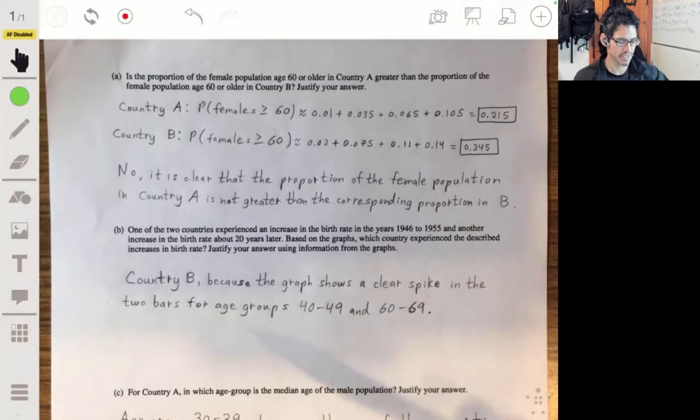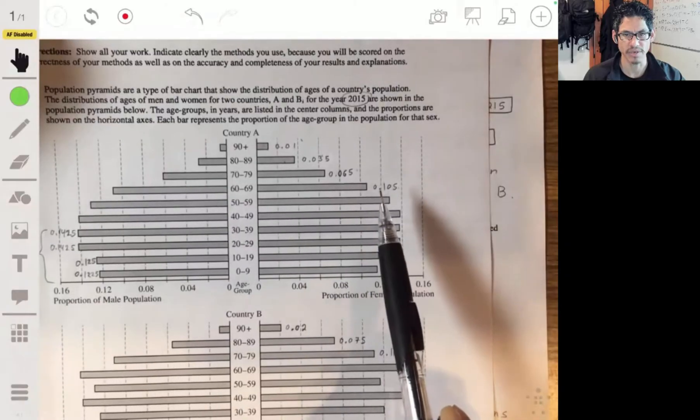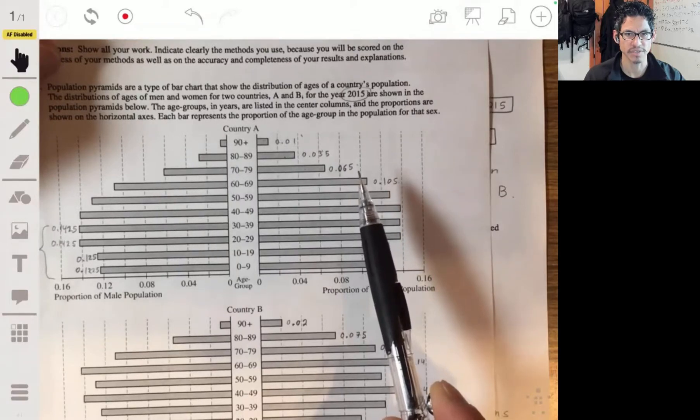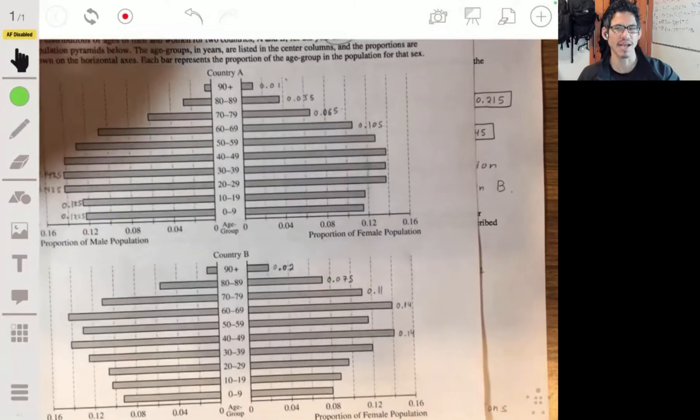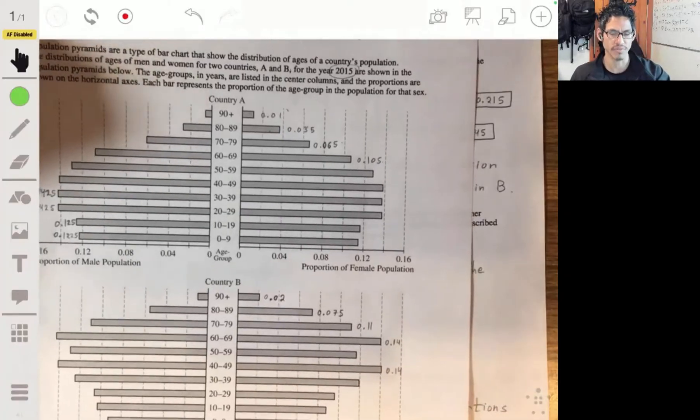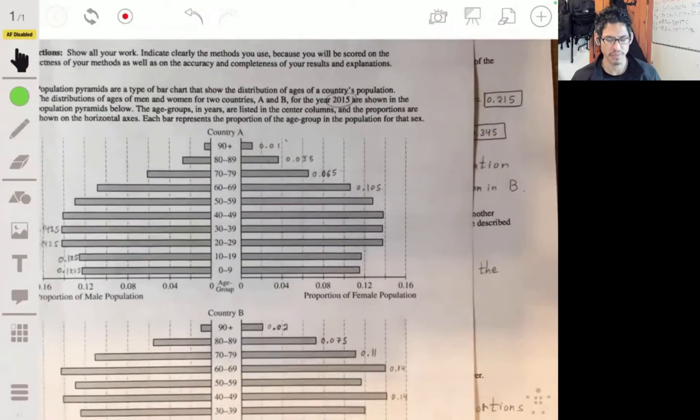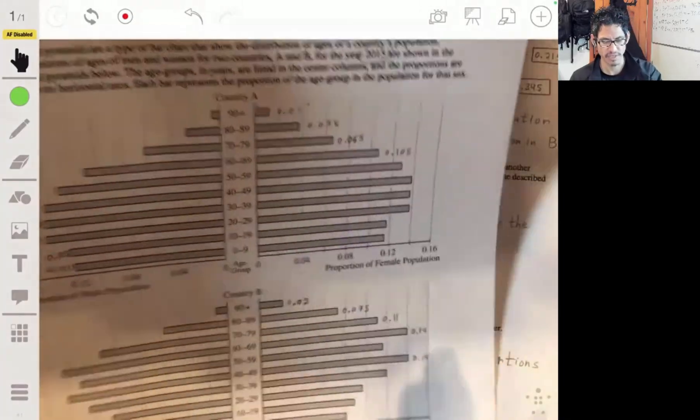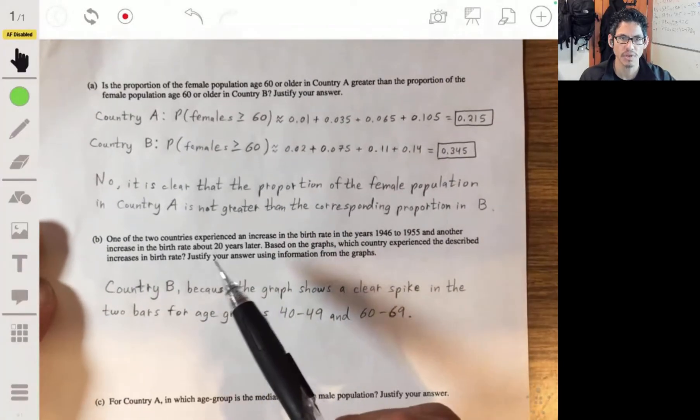Another way you can do it is probably just say that it's clear that the bars in country A for 60 years and older, that these four are going to be shorter than these four. That's kind of what they had in their rubric. I like to go with the numbers more because I'm always a little paranoid about the wording. Maybe you get a reader that doesn't agree with the way you worded it. But in either case, it's obvious. Alright, part B.